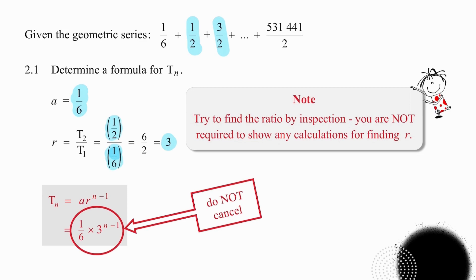Or you can take the second term, which is a half, the first term, which is a sixth, and dividing them carefully will give you 3. So you have options. Writing down the formula is trivial because you simply substitute your a and your r. And again, do not multiply those values because only the 3 has the power of n minus 1.